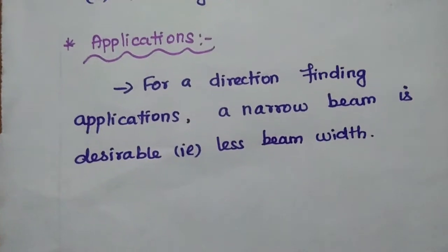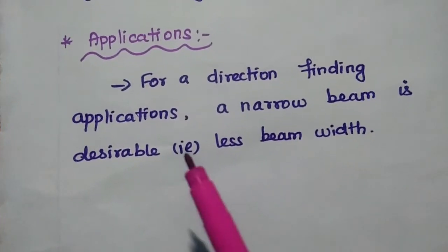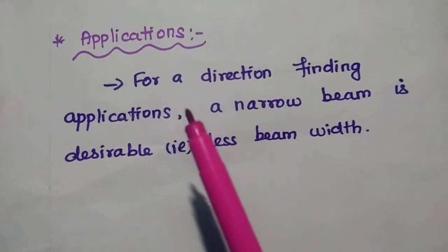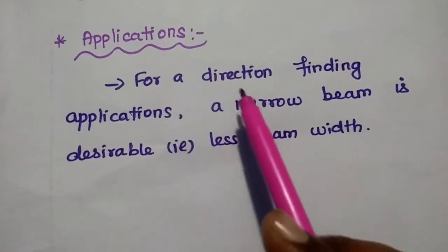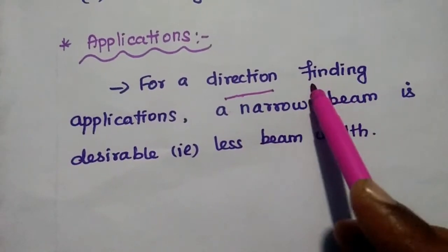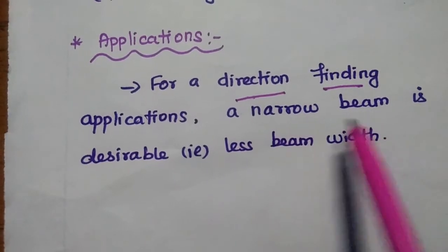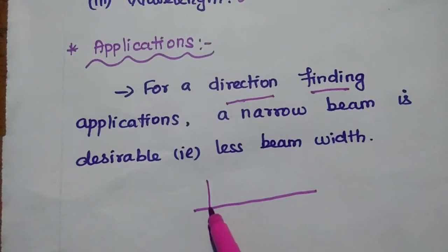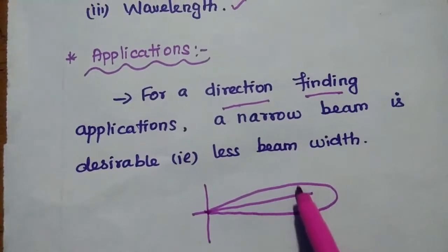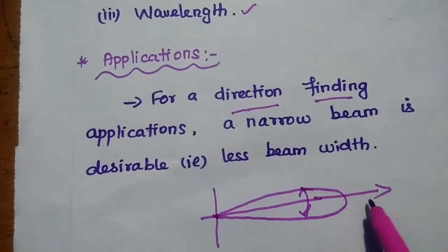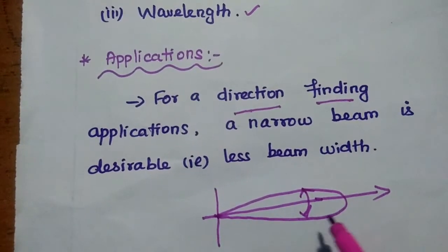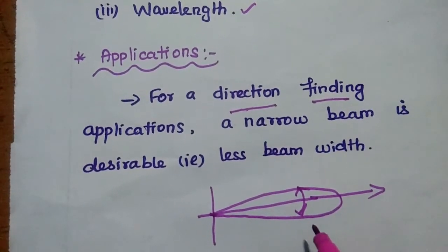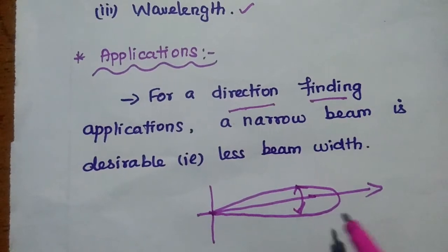The main purpose or application of beam width is for direction finding applications. Especially for direction finding, a narrow beam is desirable. Whenever the beam width is narrow, we can have maximum directivity and transmit the signal to a longer distance. So beam width plays a vital role in direction-oriented applications.